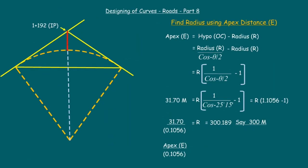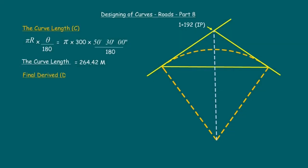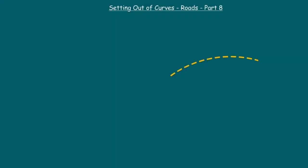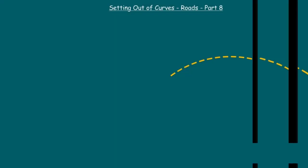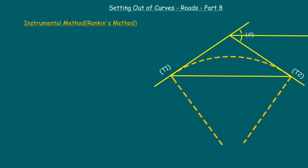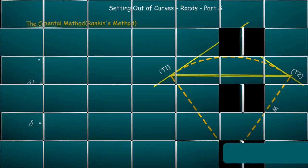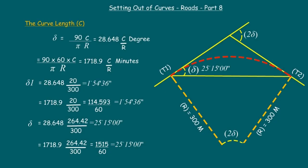The tangent distance equals 300 into 0.1056, giving the final design value. The radius of the curve is 300 meters. The half of the deflection angle, theta by 2, is equivalent to the angle between the tangent line and the chord length, confirming the design and setting out is correct. Similarly, we can calculate for any curve length required until we reach tangent point 2.